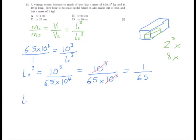Which means that L2 is going to equal the cube root of 1 over 65, which is the same as saying the cube root of 1 divided by the cube root of 65. And we know the cube root of 1, that's 1. 1 times 1 times 1 is 1. So 1 over the cube root of 65.